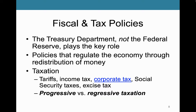Beyond monetary policy, we could talk about fiscal and tax policies. There's a lot of overlap between the two — this has to do with how the government seeks to regulate the economy through the redistribution of money. Not so much the policies that shape how we borrow money, but the redistribution of money itself. This is done through the Treasury Department, not through the Federal Reserve — these two institutions are very much meant to be separate and independent from each other to provide more stability. If you've ever paid income tax when you file your taxes, you may have had to write a check to the Treasury Department.